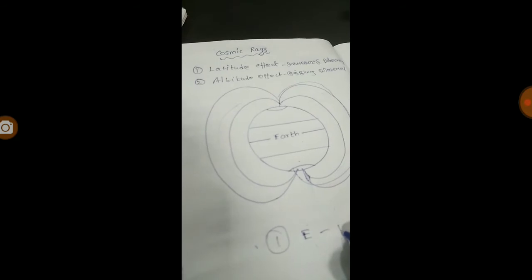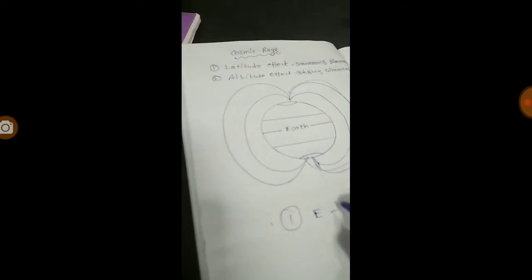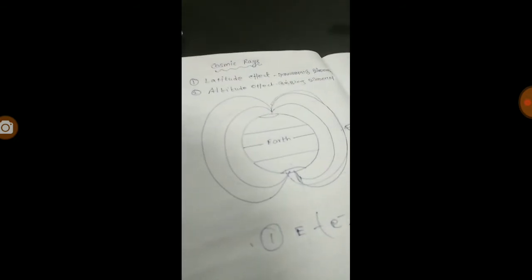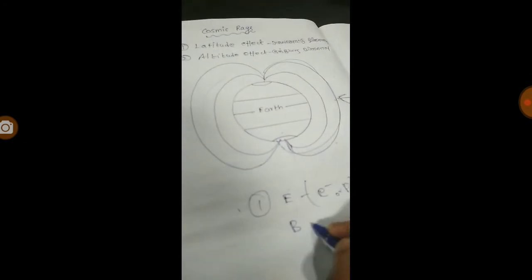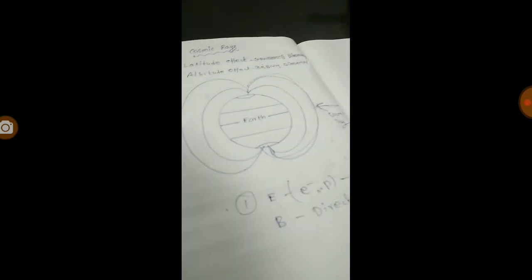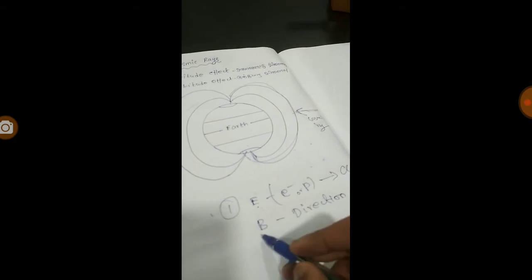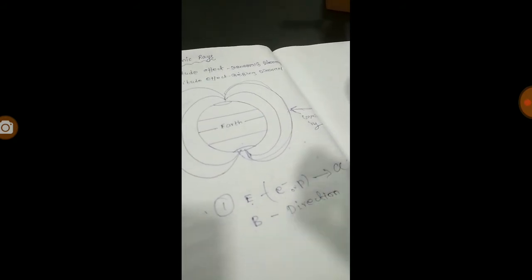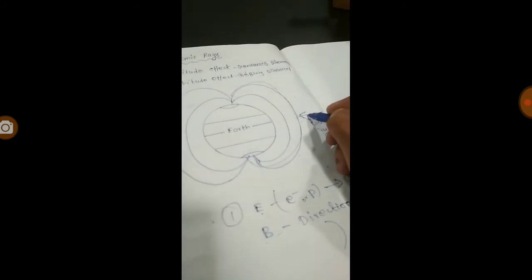Charged particles and protons are accelerated. The magnetic field gives the direction. Charged particles and the electric field will accelerate. Charged particles in the magnetic field will change direction. Charged particles are cosmic in nature.